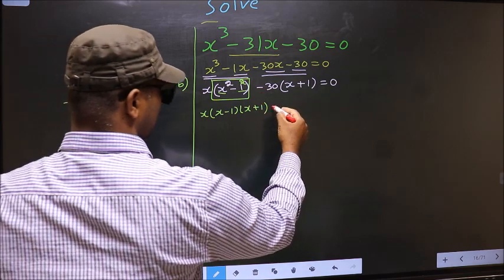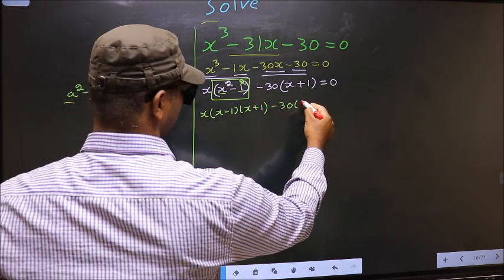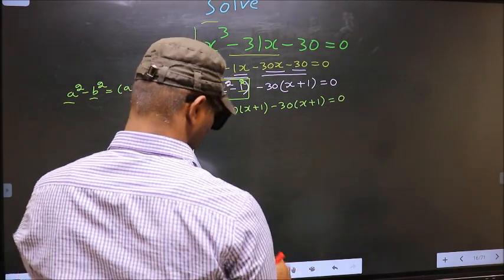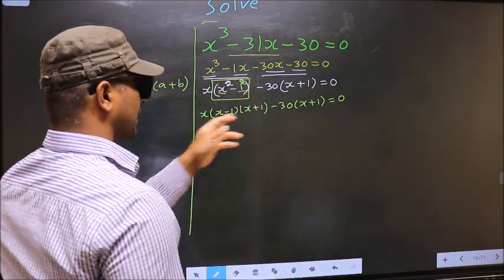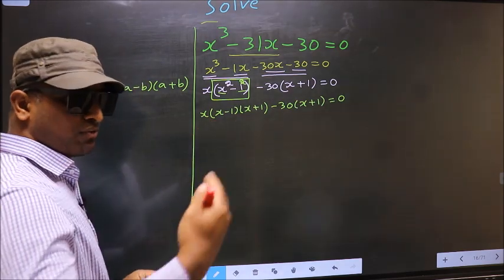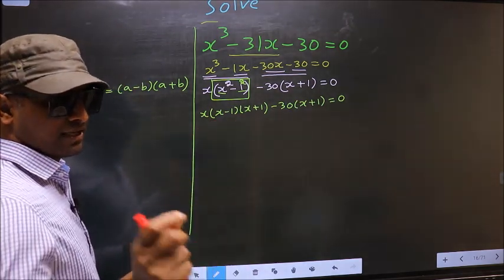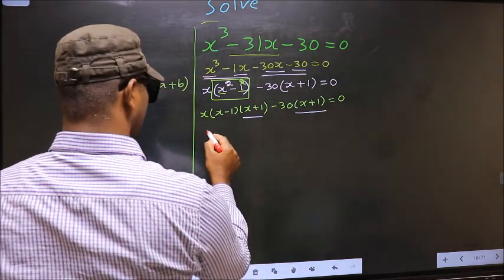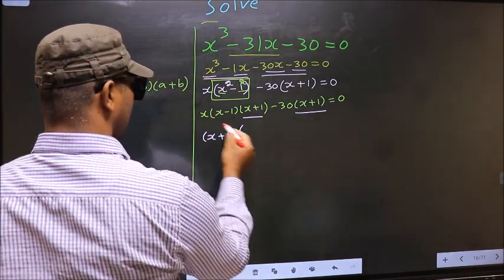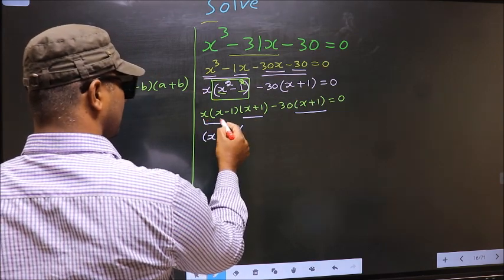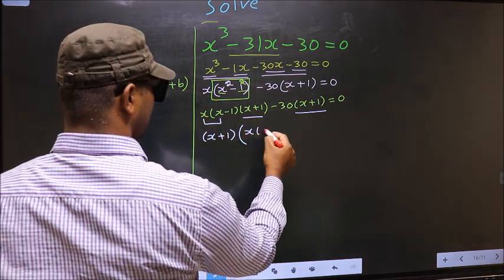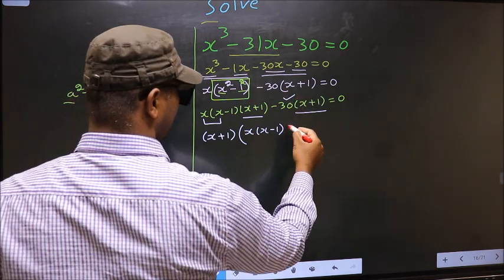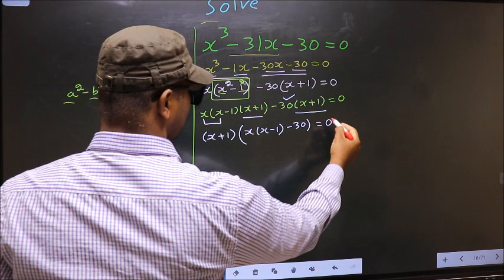Over here no change: x plus 1 equal to 0. Now from this entire equation what can be taken out common is x plus 1. So you write x plus 1 outside. Over here we are left with x times x minus 1, and over here we are left with minus 30, equal to 0.